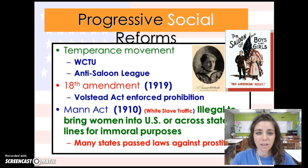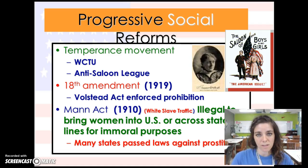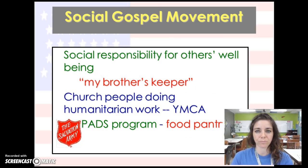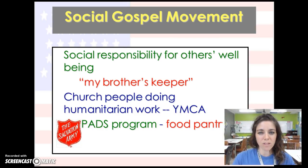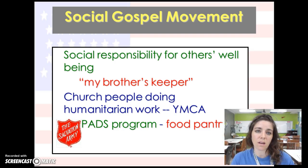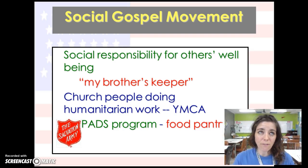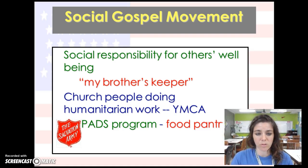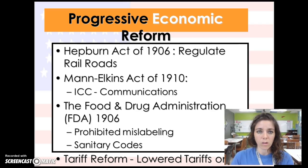Progressives also tried to regulate by making it illegal to bring women across state lines — this was the first passing of any laws against prostitution. Programs like the YMCA also came up during this time. This is the beginning of the social gospel movement, where people said it's everybody's responsibility for the well-being of others — you're your brother's keeper, so we should help those who need help.